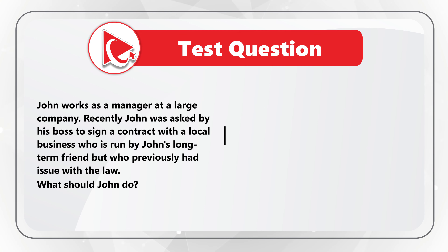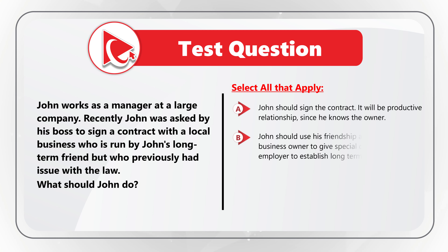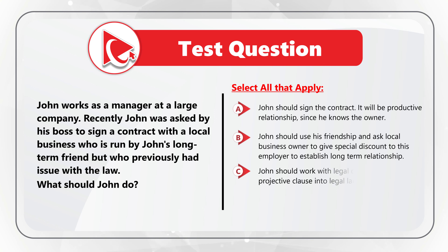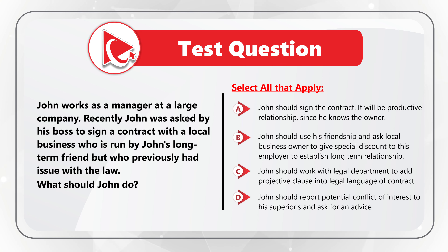There are four choices. Choice A: John should sign the contract — it will be a productive relationship since he knows the owner. Choice B: John should use his friendship and ask the local business owner to give a special discount to his employer to establish a long-term partnership. Choice C: John should work with the legal department to add a protective clause into the legal language of the contract. Choice D: John should report the potential conflict of interest to his superiors and ask for advice.